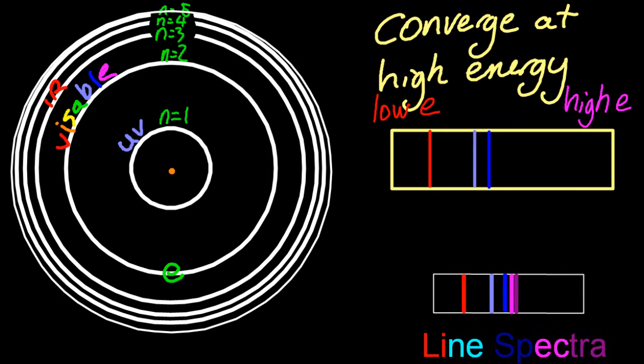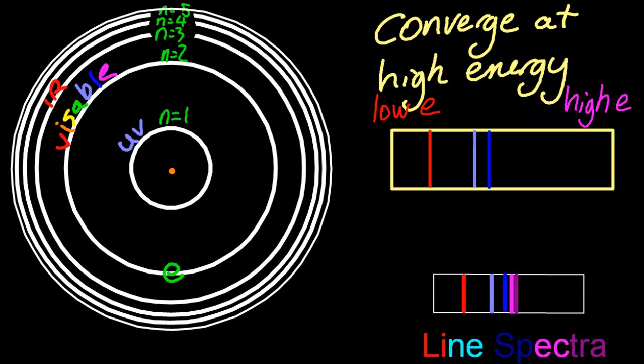I'm going to have to add some more rings now, so I'm going to stick the n equals six in. So n equals six to n equals two jump, that's even bigger, a higher energy. But notice how, since the rings are converging, those lines on the line spectra are also converging. And the others follow the same sort of pattern. So that's why the lines converge at high energy, because the rings converge as they move away from the nucleus.